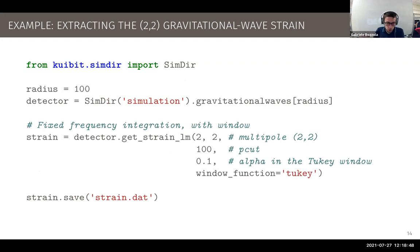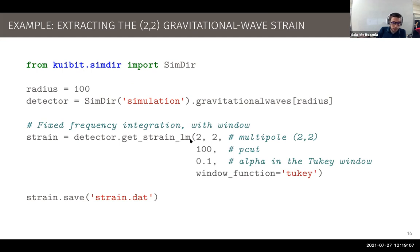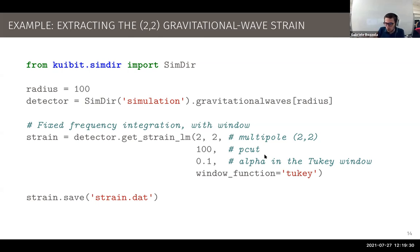Now working with strains, something we do quite often: computing gravitational wave strains. We have SimDir pointing to our simulation directory, working with gravitational waves, focused on extraction radius 100. We compute the strain for the 2-2 mode using get_strain_lm with arguments (2,2). This uses a fixed-frequency integration method requiring a cutoff frequency. I prefer to work with period rather than frequency, so there's a P_cut parameter instead of F_cut. Since this involves Fourier transforms, we may need to apply windowing to avoid spectral leakage and aliasing — here I use a Tukey window with parameter 0.1.